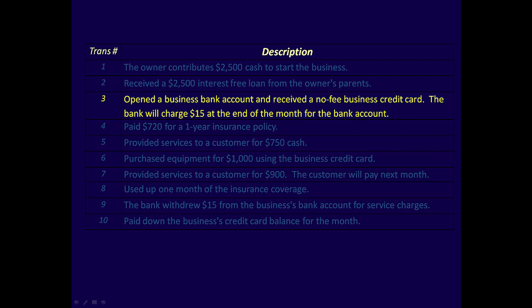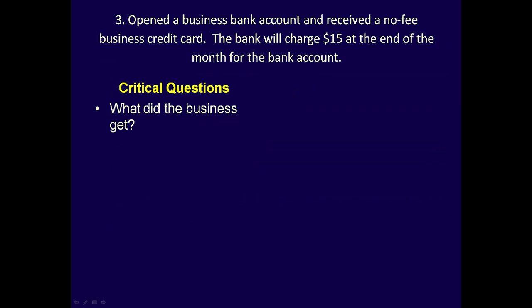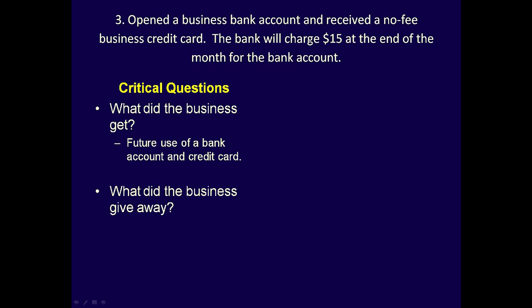Transaction 3: Opened a business bank account and received a no-fee business credit card. The bank will charge you $15 at the end of the month for the bank account. What did the business get? On the day that the business opened the bank account, they got nothing but the future right to use a bank account and a credit card. What did the business give away? The business gave away a promise to pay $15 at some point in the future, after they have had the use of the bank account and credit card. So today, they have given away nothing and they have received nothing because they have not used anything yet.